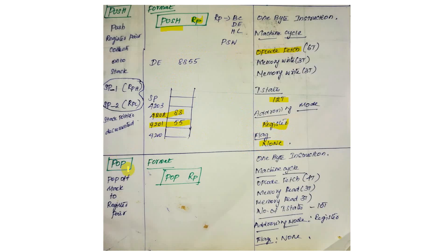Next is the POP instruction. POP reads data from the stack and loads it into the register pair RP. It is a 1-byte instruction with 3 machine cycles — one opcode fetch and two memory reads. The total number of T-states is 10. The flag is affected when PSW is popped. Register addressing mode is used.